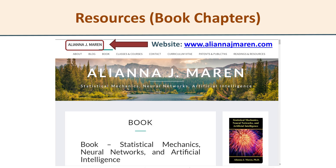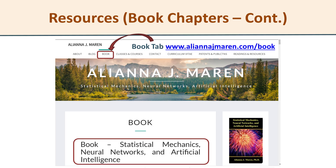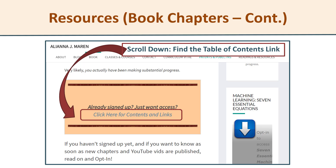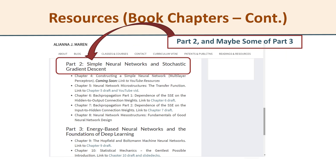I've got a book in progress — you can find it by going to my website at alianajmarin.com. Once there, click on the book tab, which gives you access to the chapter drafts. Scroll down into that orange-colored box and click the link to the table of contents. The section you'd probably find most relevant right now is part two, with several chapters dealing with transfer functions and backpropagation.